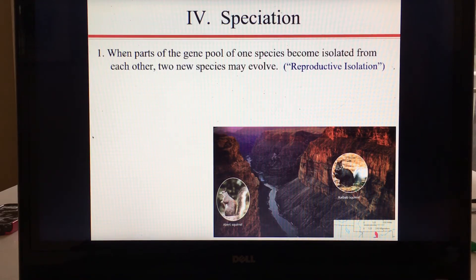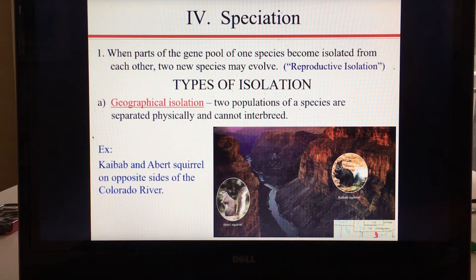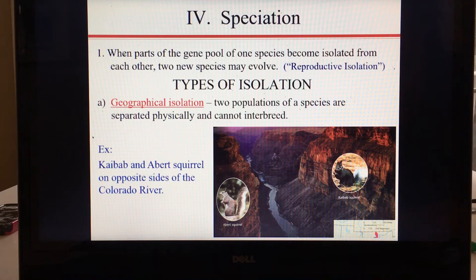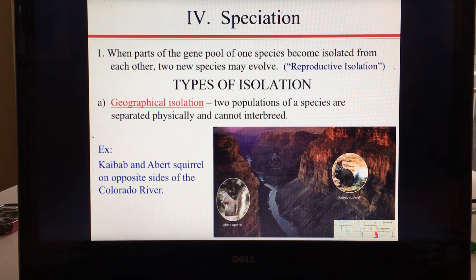Anytime you have reproductive isolation, you can end up with speciation. The first type of isolation is geographical isolation: if you keep two populations apart based on geography so they can't interbreed, mutations will be random in each population and you'll eventually have different traits in those populations.